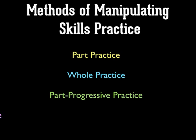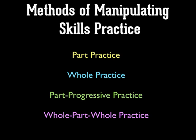There are four different methods of manipulating skills. Once you've identified what sort of skill your skill is — if it's a gross skill or a fine skill, or a serial skill or a continuous skill — you can then place that skill into a practice that's suitable for that type of skill. The four main methods of manipulating skills practice are: part practice, whole practice, part progressive practice, and whole-part-whole practice. I'm going to go through each of those briefly, and we'll develop these themes throughout your next lesson.